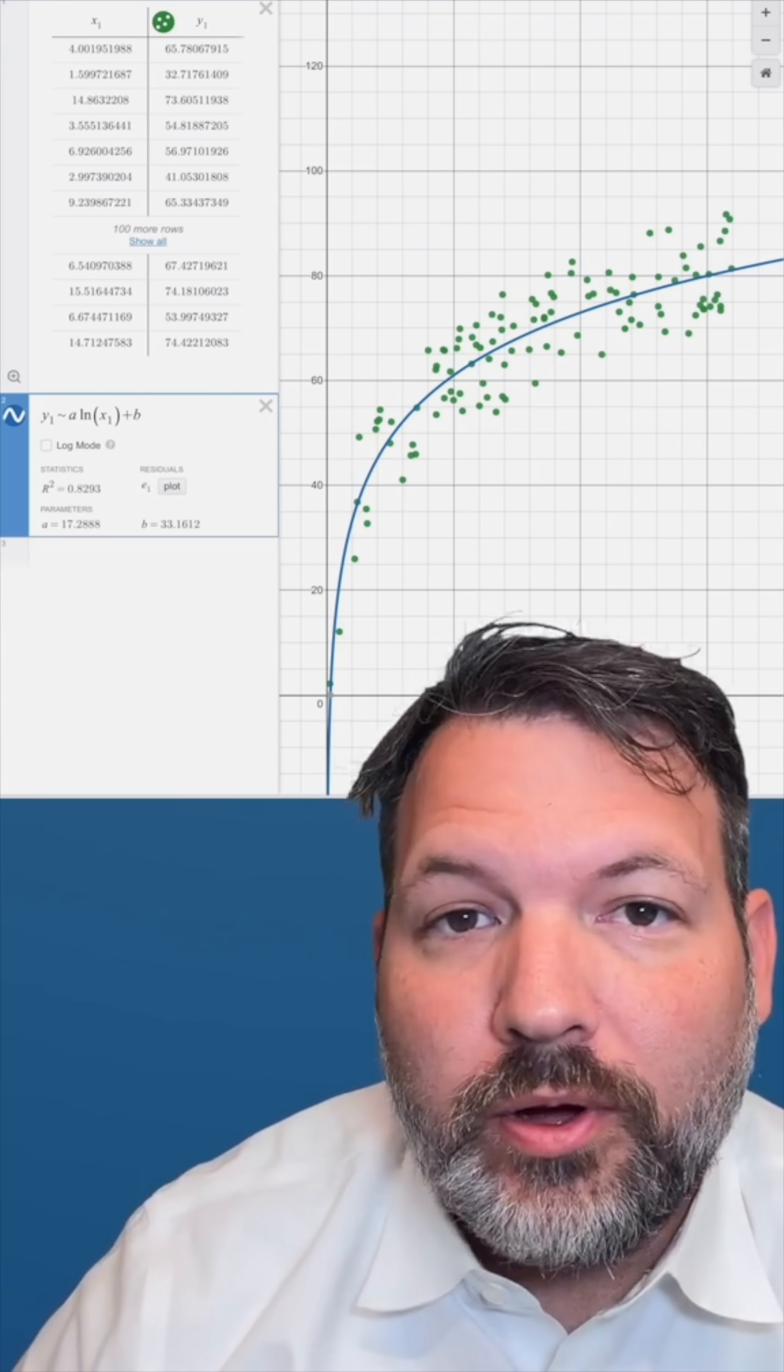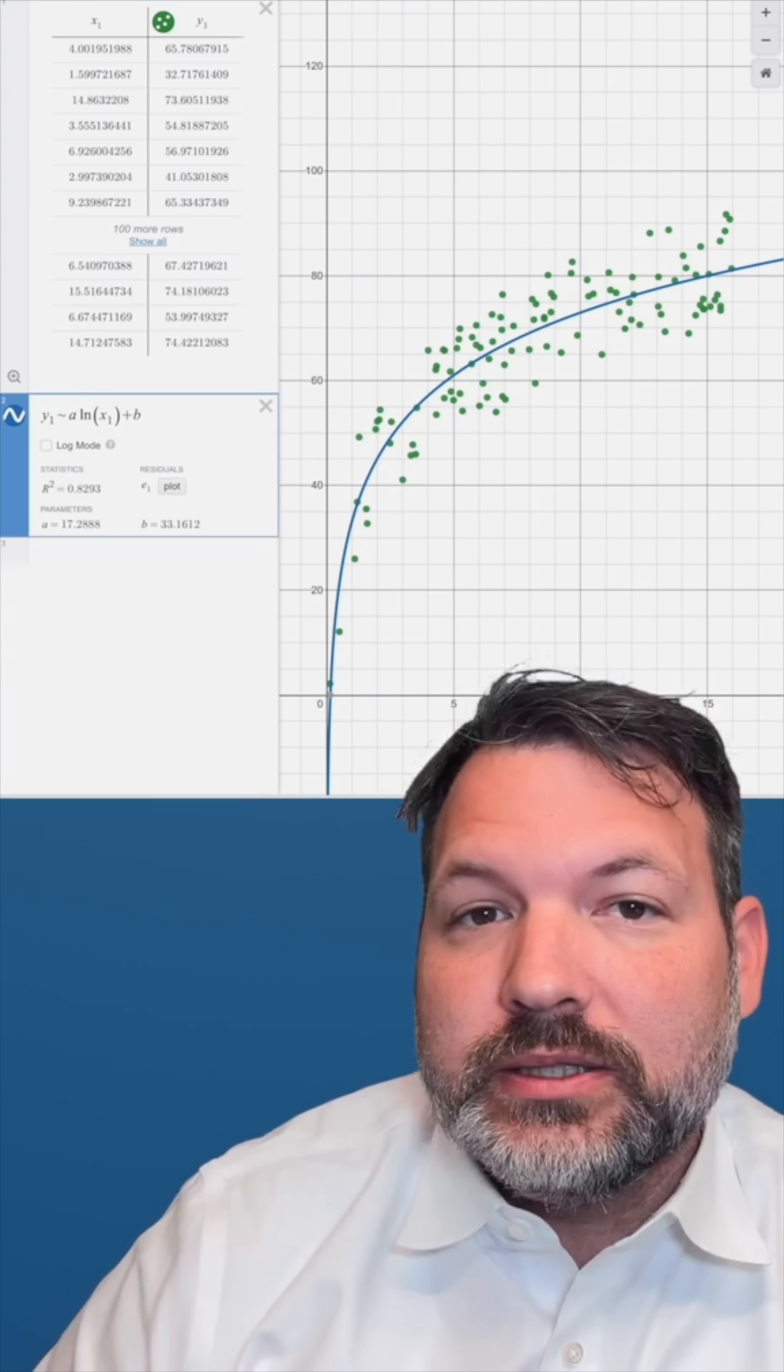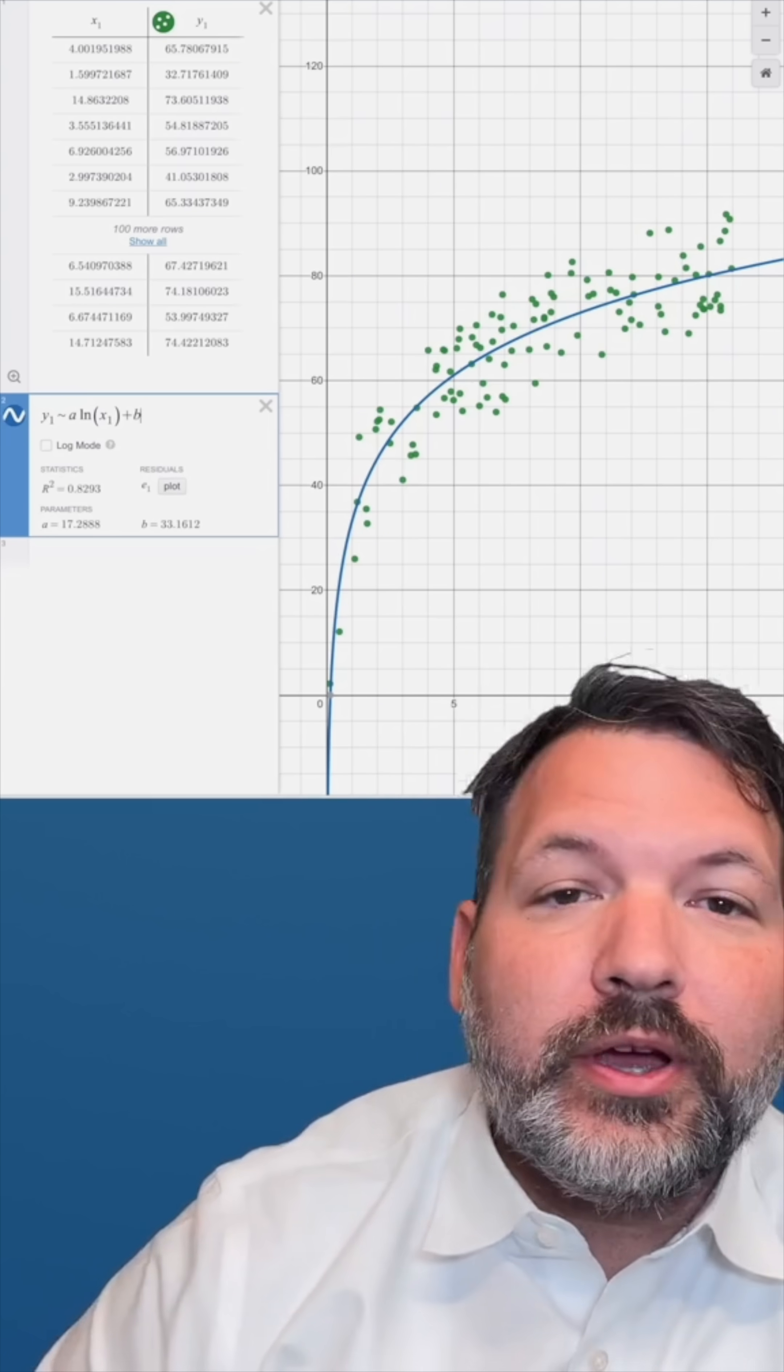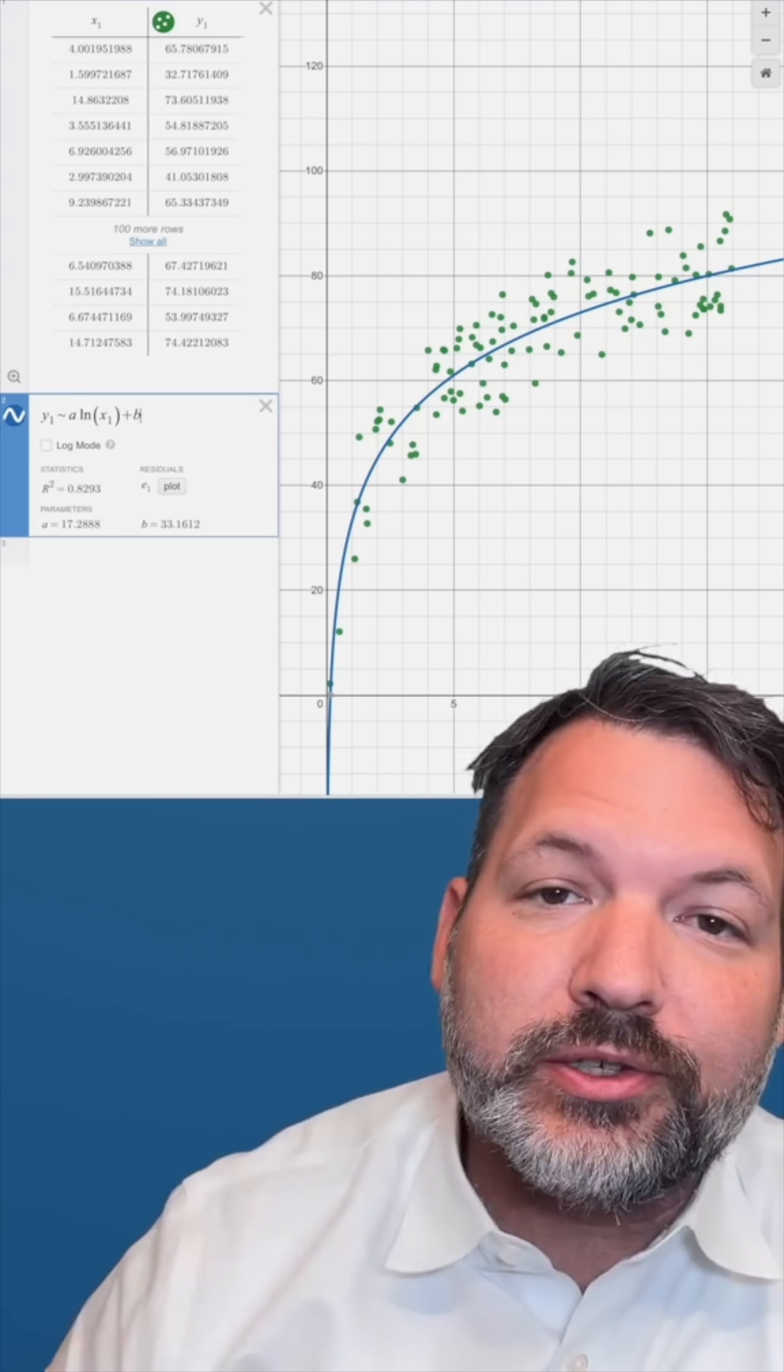So a dog that's one year old, well, the logarithm of one is zero. Zero times 17 is zero. Zero plus 33 is 33. A one-year-old dog is about 33 human years old.